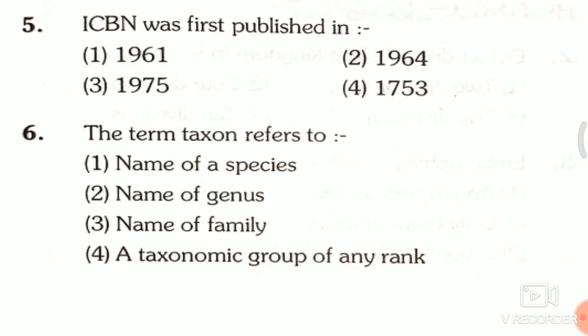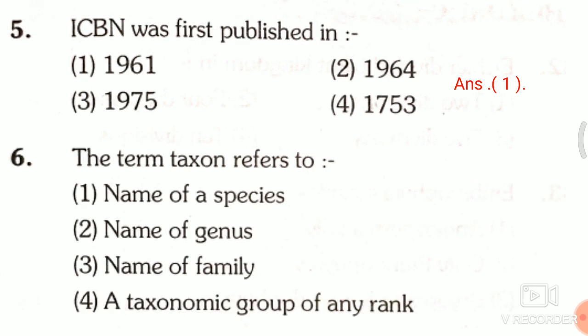Question 5: ICBN, the International Code of Botanical Nomenclature, was first published in — first, 1961; second, 1964; third, 1975; fourth, 1953. The answer is the first one, that is 1961.